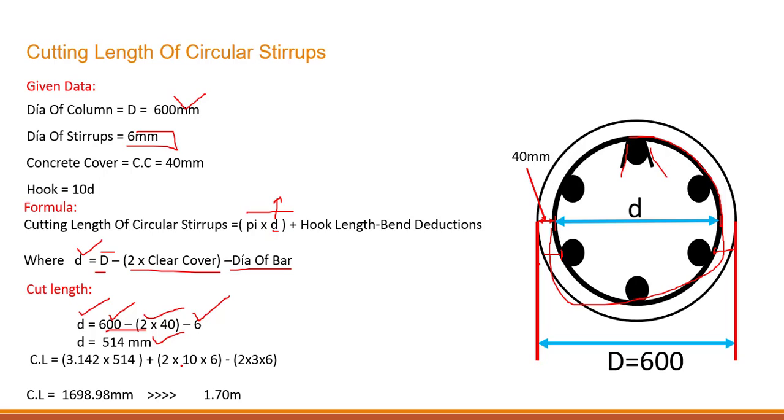Plus we need to add the hook length as well. So we have two hooks for 10D, 10 into dia of bar, minus we need to do the bend deduction. So we have two bends for 135 degree, 3D. So this is what the values over here in this formula.